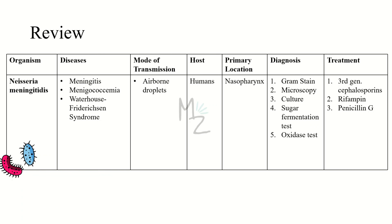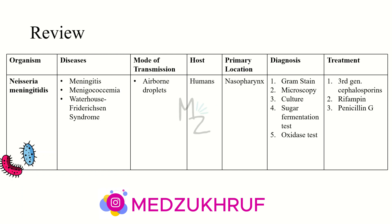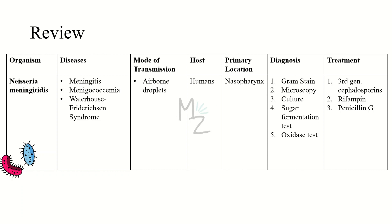In summary, the organism is Neisseria meningitidis, responsible for causing meningitis, meningococcemia, Waterhouse-Friderichsen syndrome, and bacteremia. It is transmitted via respiratory or airborne droplets. Humans are the only hosts and it colonizes the nasopharynx. Diagnosis is based on gram staining, microscopy, culture, sugar fermentation test, oxidase test, and catalase test. It is treated with third-generation cephalosporins, rifampin, and penicillin G.